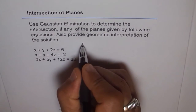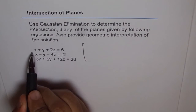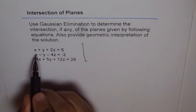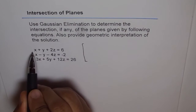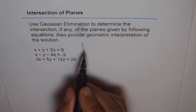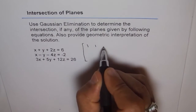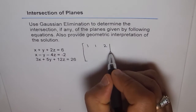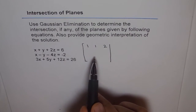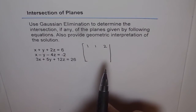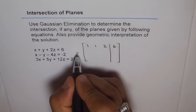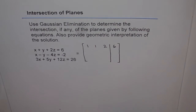The coefficient of the first plane is 1 for x, 1 for y, and 2 for z, which equals 6 on the right side. We write the coefficients first: 1, 1, and 2. Then we draw a line here. The coefficients of our plane will be written on the left side of this line, and on the right side we write the values, which is 6. This is called the augmented matrix.